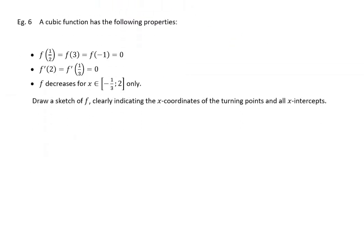I'll go on to the next one. The next one says a cubic function has the following properties: f(1/2) = f(3) = f(-1) = 0. So basically, the y-values are 0. Whenever your y-values are 0, that would imply that those are x-intercepts. So immediately, I have no idea where the y-axis would be in this, but I know that at x = -1, at x = 1/2, and at x = 3, I would have x-intercepts.